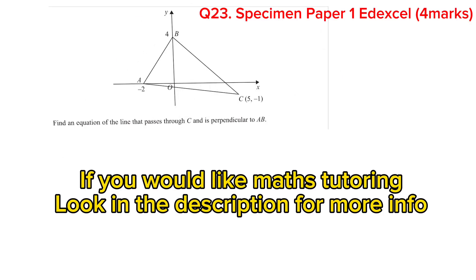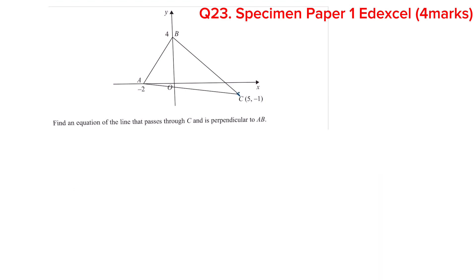So in this first question we are asked to find an equation of the line that passes through C, which is here, and is perpendicular to AB. So this line is going to look something like this. However, it's going to be straight obviously.